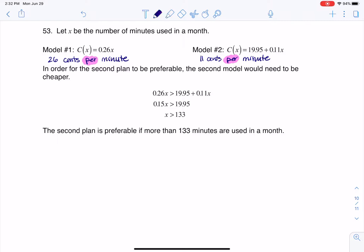Hey, Math 31. I had a question coming out of section 4.2, number 53, where we were being asked to choose between two different types of cell phone plans and figure out, once we get the linear models for those cell phone plans, how many minutes would you have to use in a month in order for the second plan to be preferable?